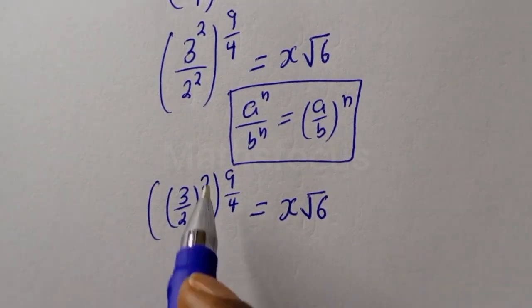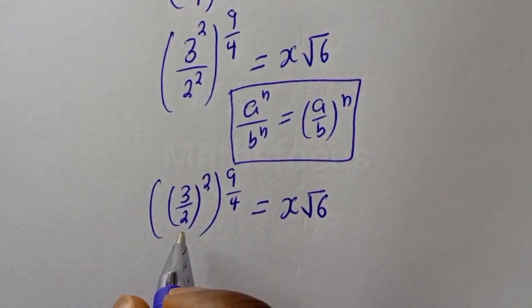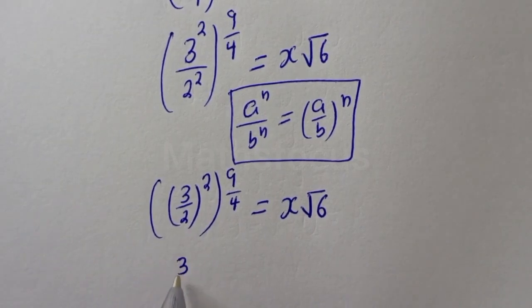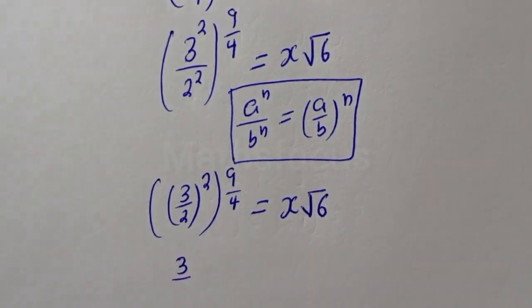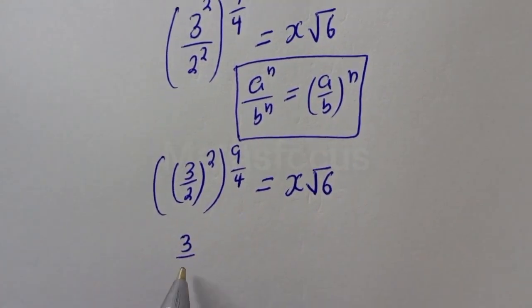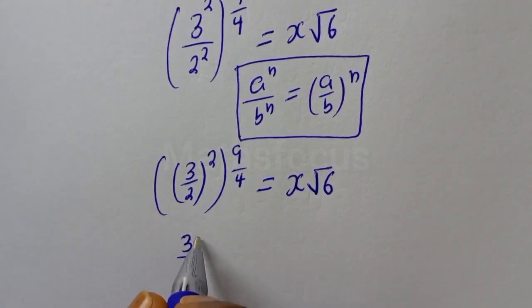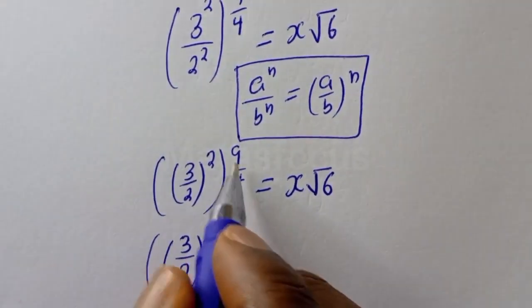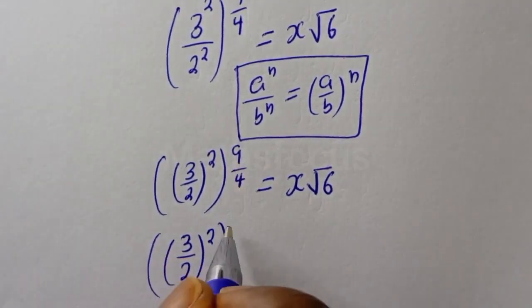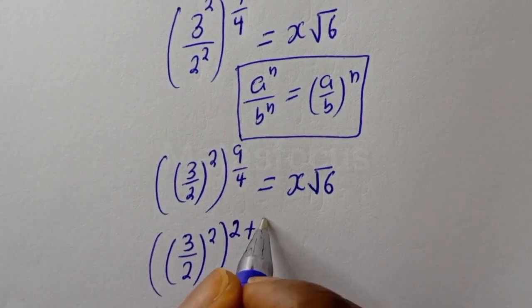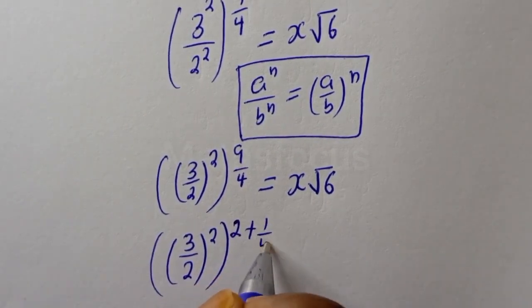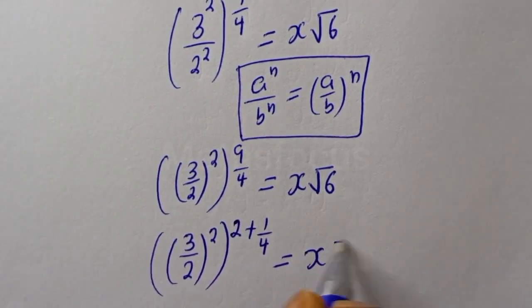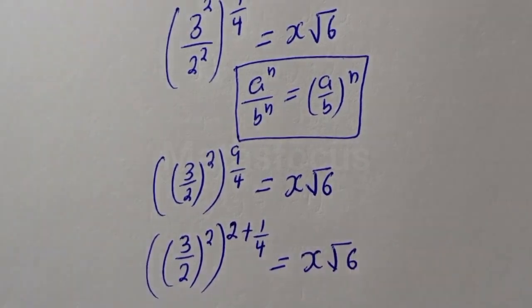Then this is 3 over 2 to the power of 2 times 9 over 4, which gives 2 times 2 over 4 plus 2 times 1 over 4, is equal to s square root of 6.